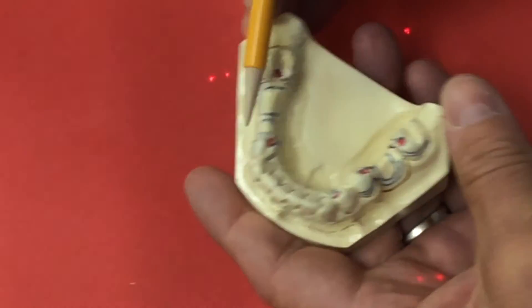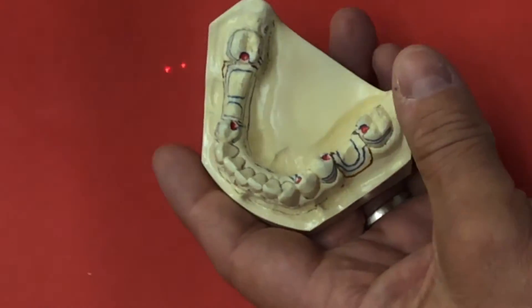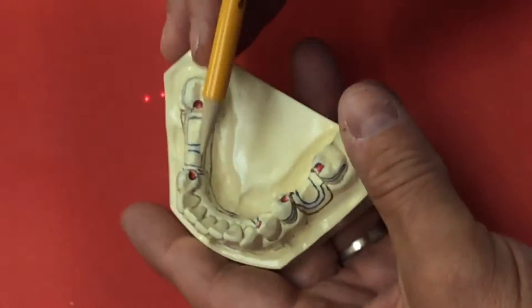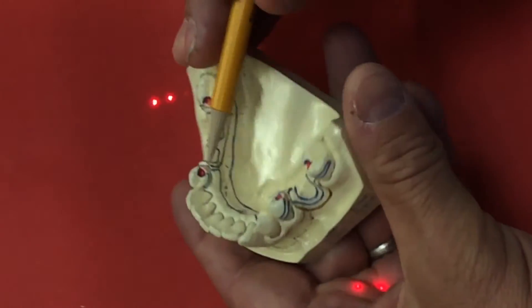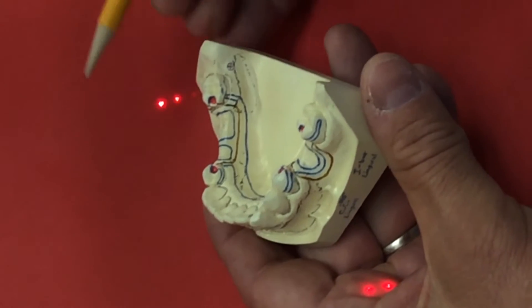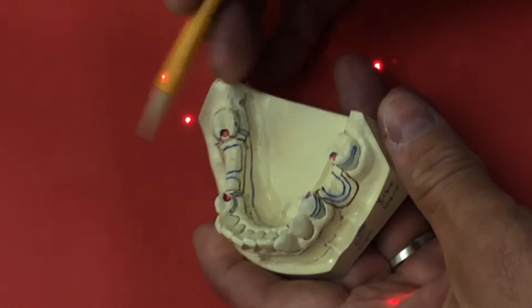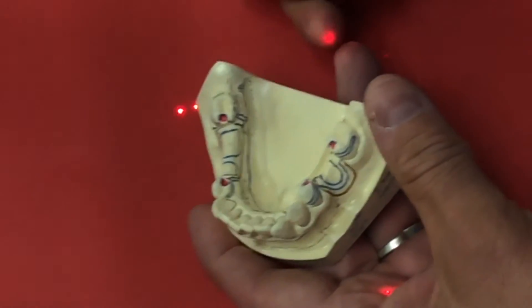Would it be an RPI? No. We've got a distal rest. It's just going to be an I-bar. And with that kind of an I-bar, we need reciprocation just like we need with an Akers clasp or circumferential clasp. We need something bracing on the other side.